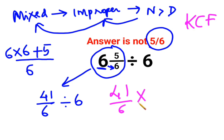C stands for changing the division sign to multiplication and F stands for flipping or taking reciprocal of 6 which is 1 upon 6.